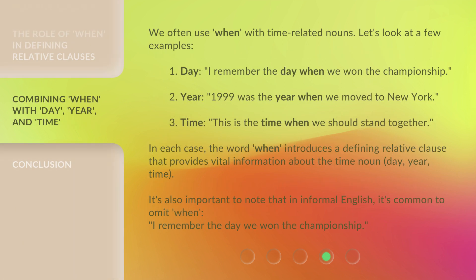We often use 'when' with time-related nouns. Let's look at a few examples. 1. Day: 'I remember the day when we won the championship.' 2. Year: '1999 was the year when we moved to New York.' 3. Time: 'This is the time when we should stand together.' In each case, the word 'when' introduces a defining relative clause that provides vital information about the time noun: day, year, or time.